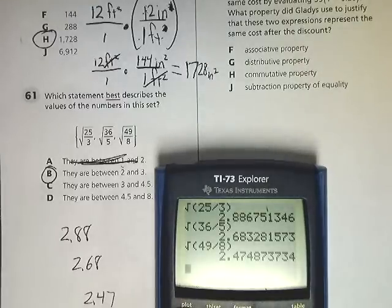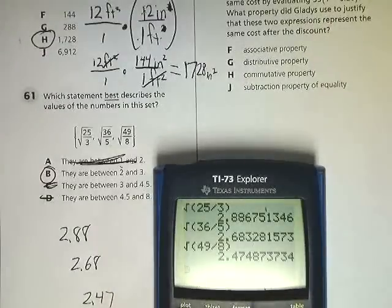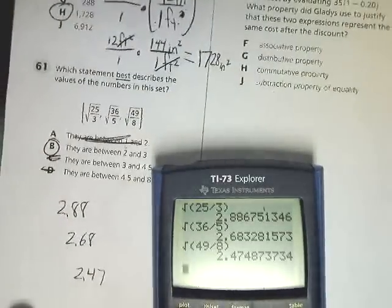They're not between 3 and 4.5, and they're certainly not between 4.5 and 8. So the answer to number 61 is B, the simplest one.